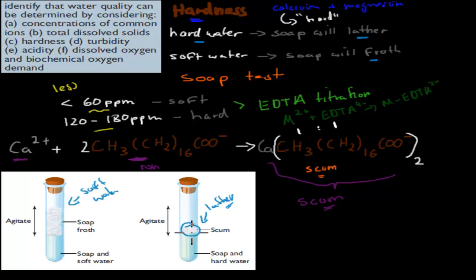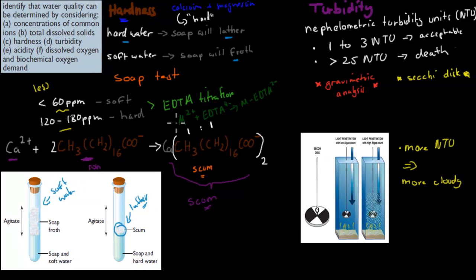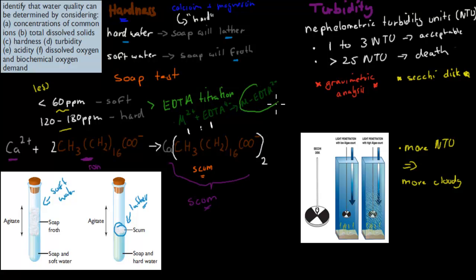The EDTA titration is the quantitative test — it gives us actual numbers. Calcium or magnesium metal ions form a one-to-one relationship with EDTA ions in a titration, forming M-EDTA. Because it is a one-to-one ratio, the more EDTA that disappears, the more calcium or magnesium we had in the sample. We can measure the amount directly, which gives us the exact concentration. Those are two tests for hardness.